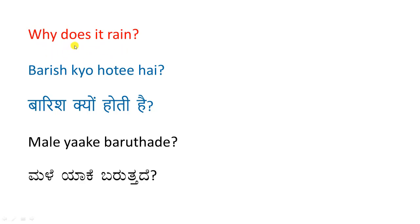Why does it rain? बारिश क्यों होती है? मले याके बरुत्त दे. बारिश - मले, क्यों - याके, होती है - बरुत्त दे. बारिश क्यों होती है? मले याके बरुत्त दे.